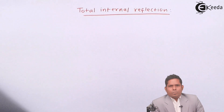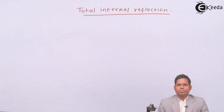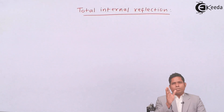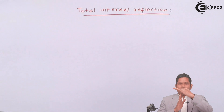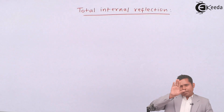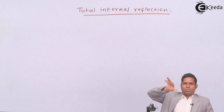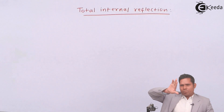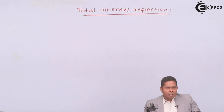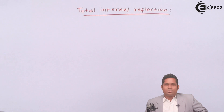When light travels from a denser medium to a rarer medium, it bends away from the normal. And if you keep on increasing the angle of incidence in the denser medium, it bends still more away from the normal — more towards the base. At a certain angle of incidence in the denser medium, the ray moves along the surface.